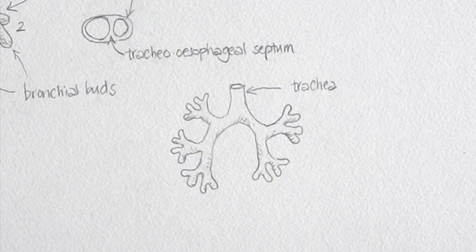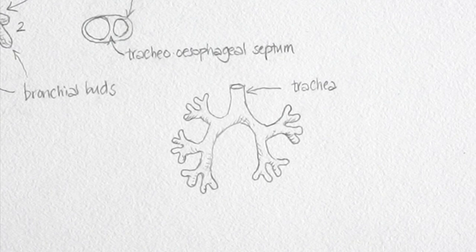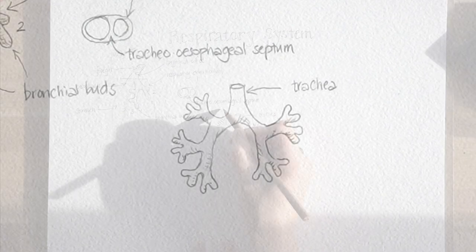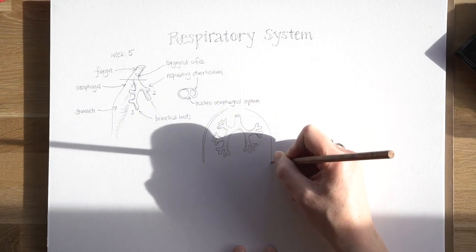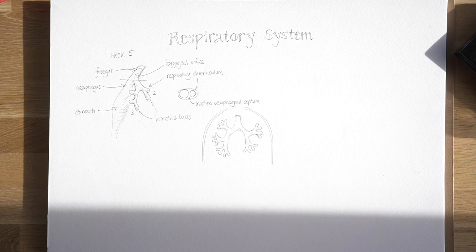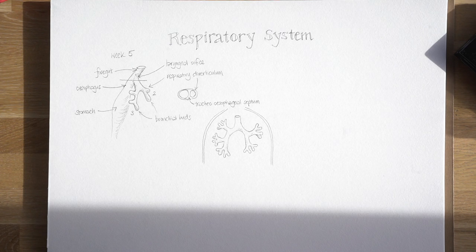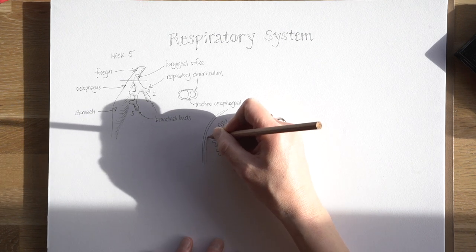The lining of the bronchial tree — the respiratory epithelium — all derives from endoderm, because it came from the gut tube. Outside that, the muscles and cartilage are all derived from mesoderm, specifically the splanchnic layer of mesoderm around that gut tube. These embryonic lungs are growing into a space inside the embryo called the intraembryonic cavity, also known as the pleuropericardial peritoneal canal.